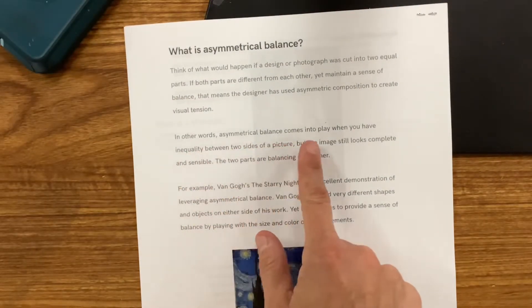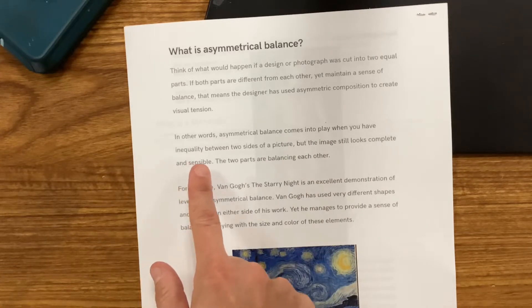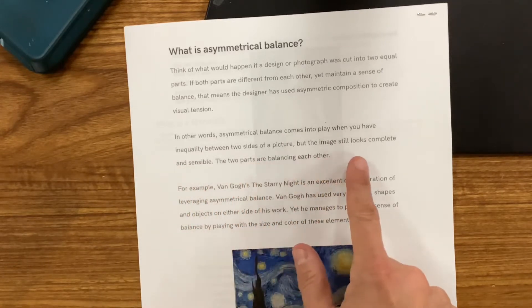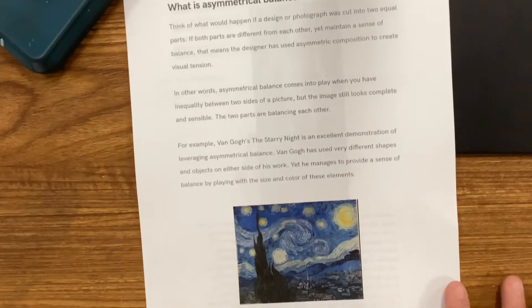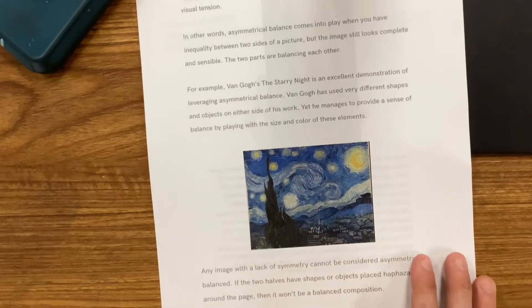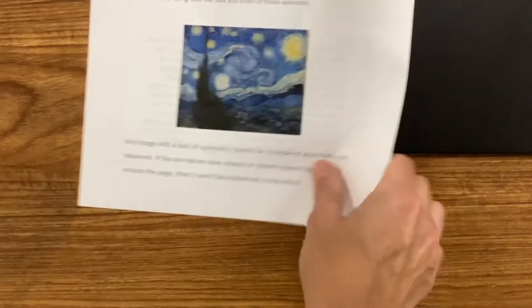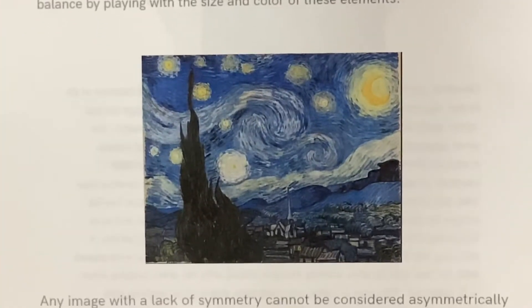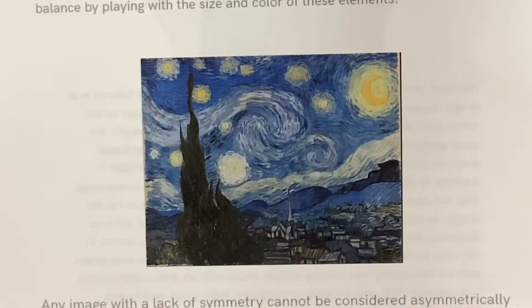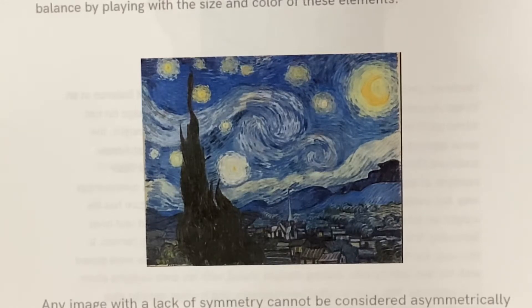Asymmetrical balance comes into play when you have inequality between two sides of a picture, but the image still looks complete and sensible — the two parts are balancing each other. For example, Van Gogh's The Starry Night is an excellent demonstration of leveraging asymmetrical balance. Van Gogh used very different shapes and objects on either side of his work, yet manages to provide a sense of balance by playing with size and color.